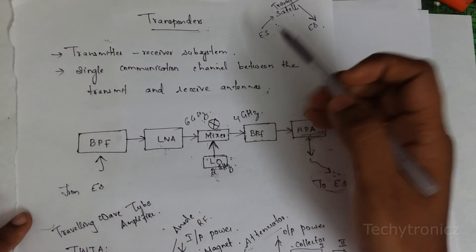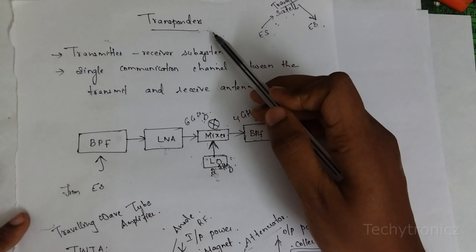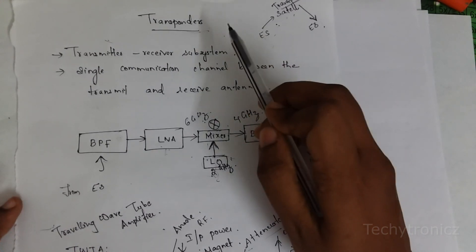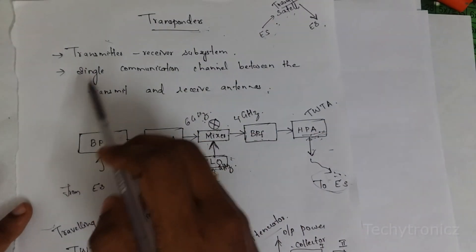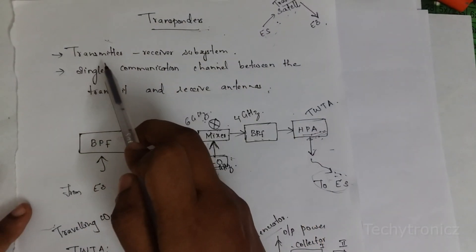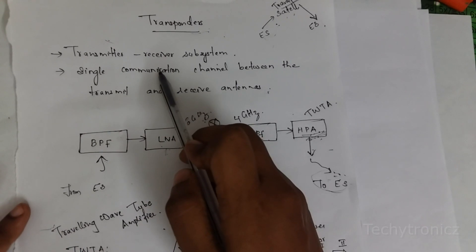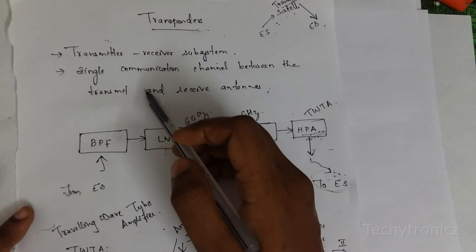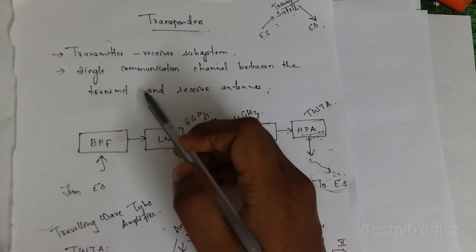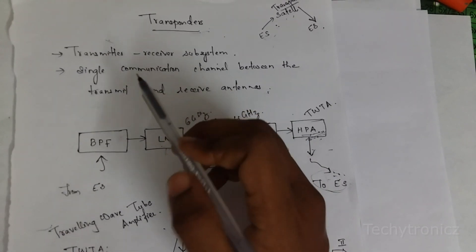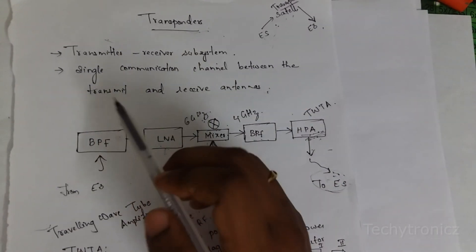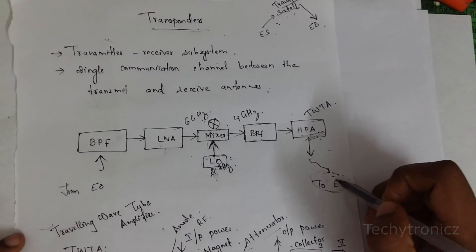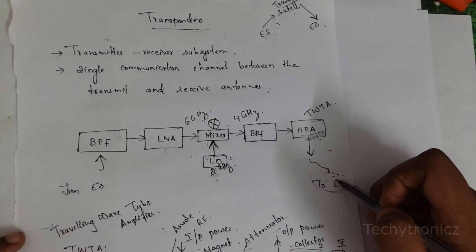Hi students, today we are going to learn about transponders. A transponder is a subsystem which we are using in a satellite. Transponder means it is a transmitter and receiver subsystem. This transponder gathers the signals over a range of uplinked frequencies and retransmits them on a different set of downlinked frequencies to receivers on the earth station. That is the purpose of a transponder.